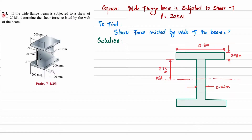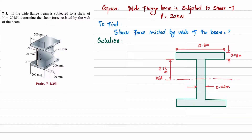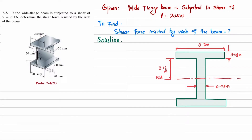Welcome back. Problem 7-3: if a wide flange beam is subjected to a shear of 20 kN, determine the shear force resisted by the web of the beam. This is a wide flange beam with a shear of 20 kN. All dimensions of the beam cross-section are shown. We have to determine the shear force resisted by the web. The shear stress formula is tau = VQ / IT. V is given as 20 kN; we need to find Q, I, and T.